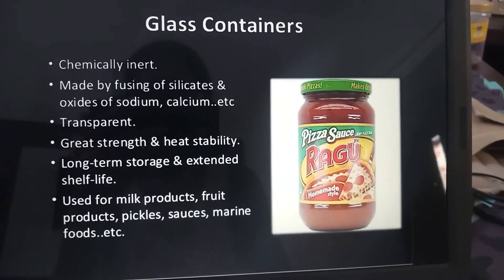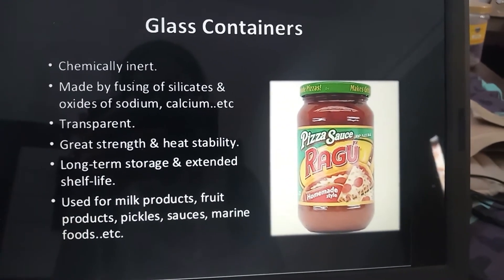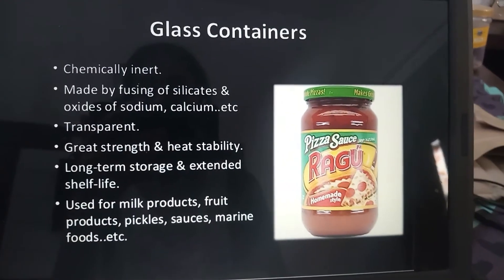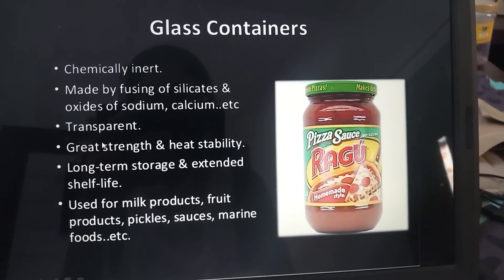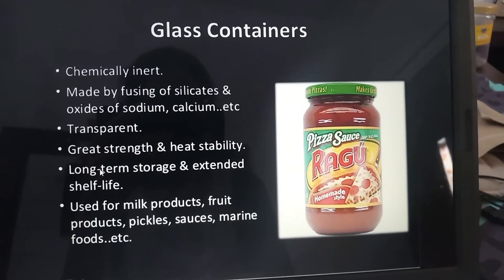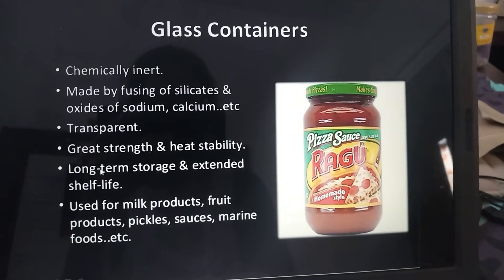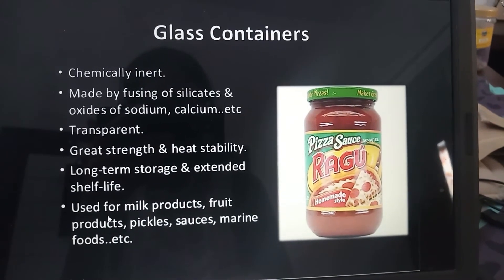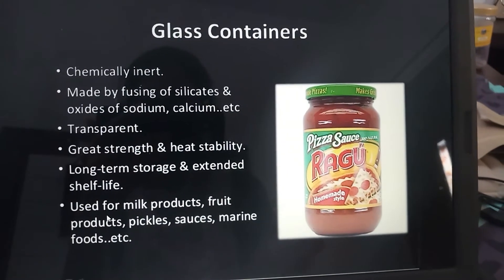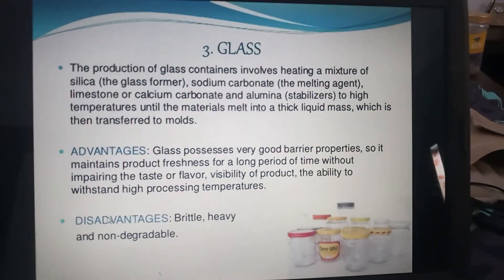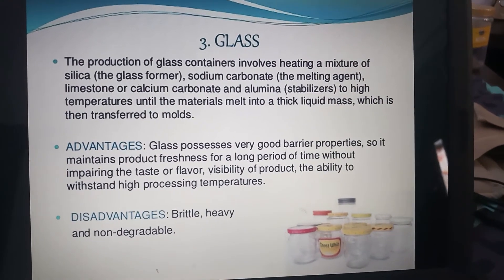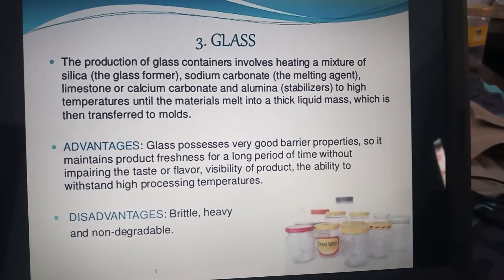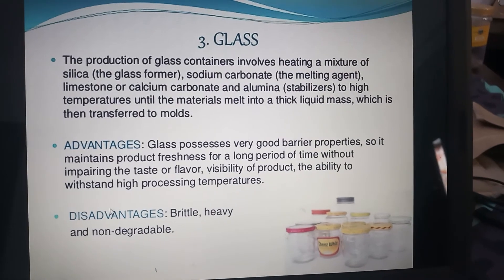The second type of packaging material is glass. Glass containers are chemically inert, transparent, and allow long-term storage and extended shelf life. They can be used for milk products, fruit products, pickles, and sauces. The disadvantages of glass are that it is brittle, heavy, and non-biodegradable.